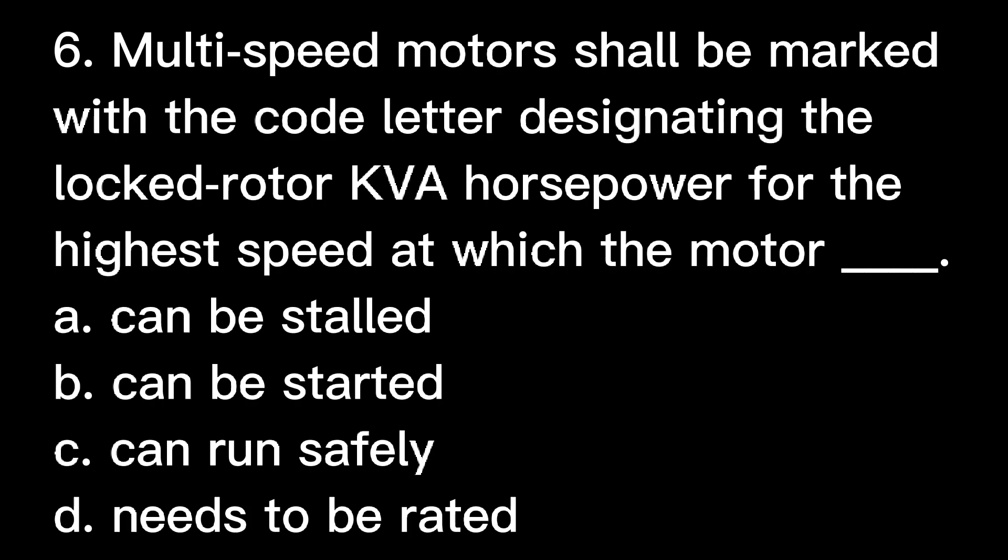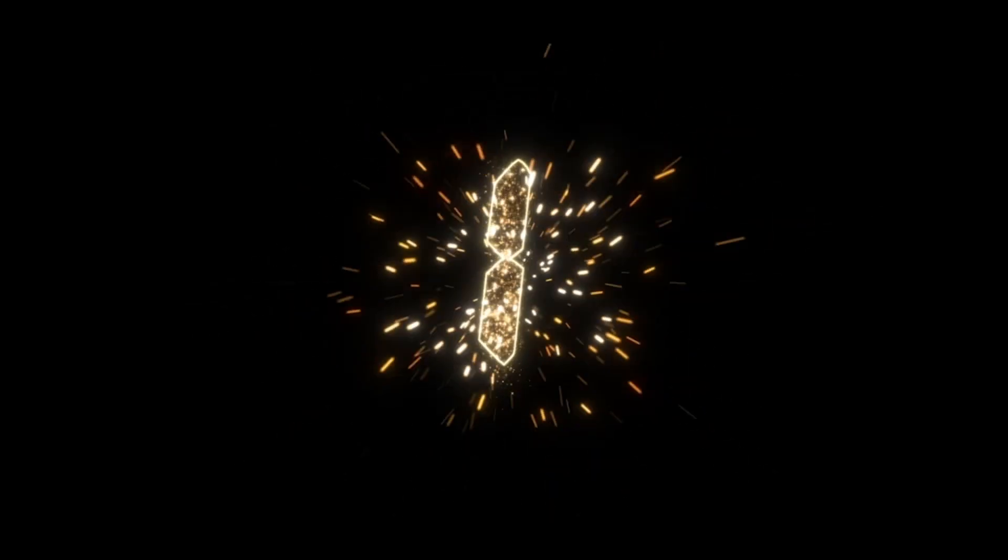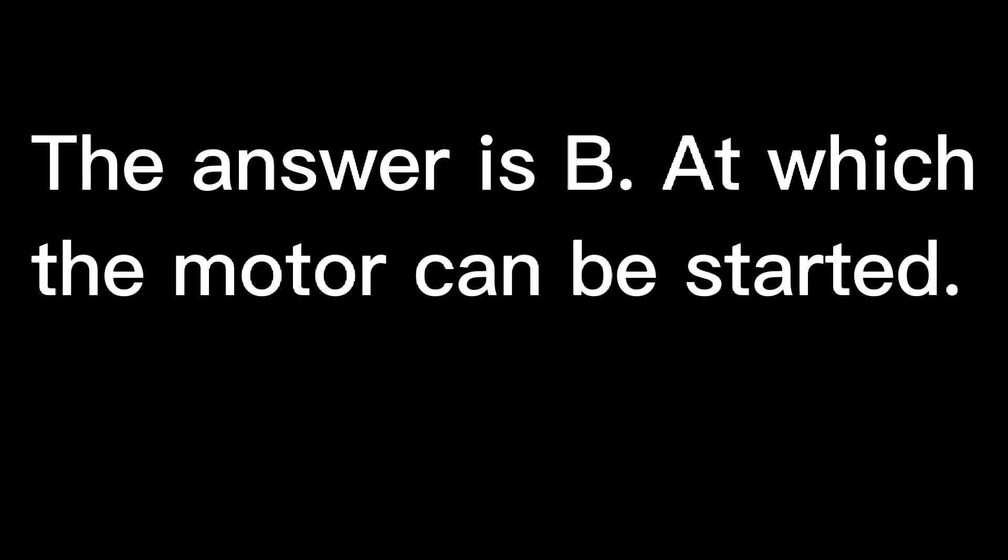Question 6: Multi-speed motors shall be marked with a code letter designating the locked rotor KVA horsepower for the highest speed at which the motor: A. can be stalled, B. can be started, C. can run safely, D. needs to be rated. The answer is B, at which the motor can be started.